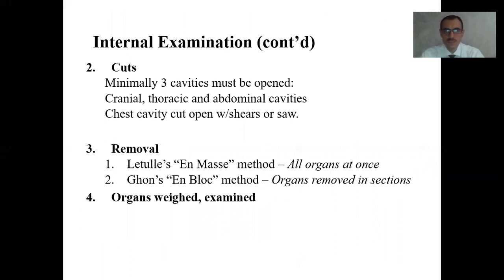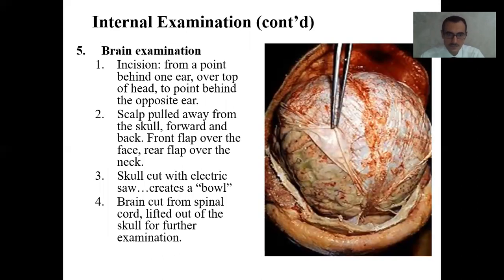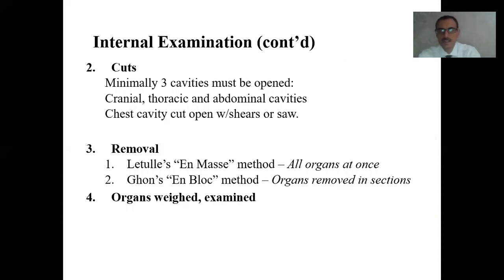For internal examination, continuing with opening the body cavities: minimally three body cavities must be opened — cranial, thoracic, and abdominal. The chest cavity and neck are opened with saws. Then we remove the internal organs. There are generally two methods for removing organs: the en masse method where all organs are removed at once, and Ghon's en bloc method where organs are removed in sections. Organs are then weighed and examined.